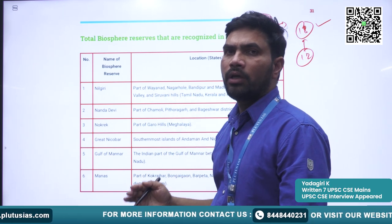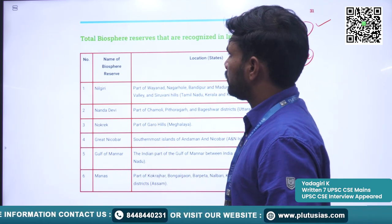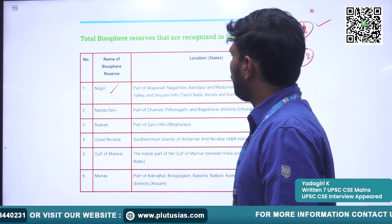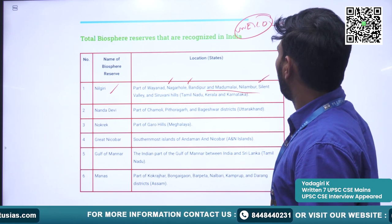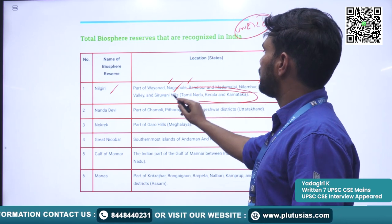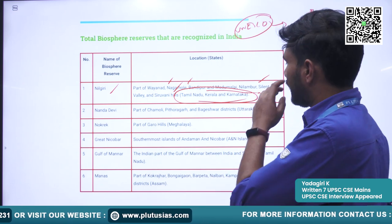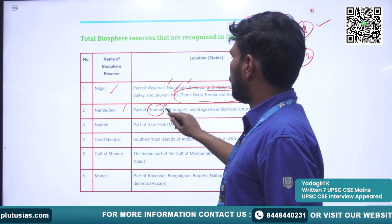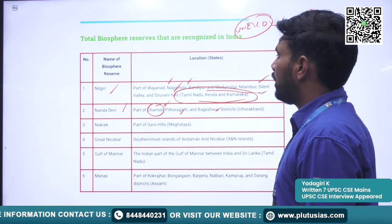Now we will see all 18 Biosphere Reserves recognized by the Indian government. The first is Nilgiri — also under UNESCO protection. It includes Wayanad, Nagarhole, Bandipur, Mudumalai, Nilambur, Silent Valley, and Siruvani Hills, hosted across three states: Tamil Nadu, Karnataka, and Kerala. Next is Nanda Devi, hosted in the districts of Chamoli, Pithoragarh, and Bageshwar in Uttarakhand.